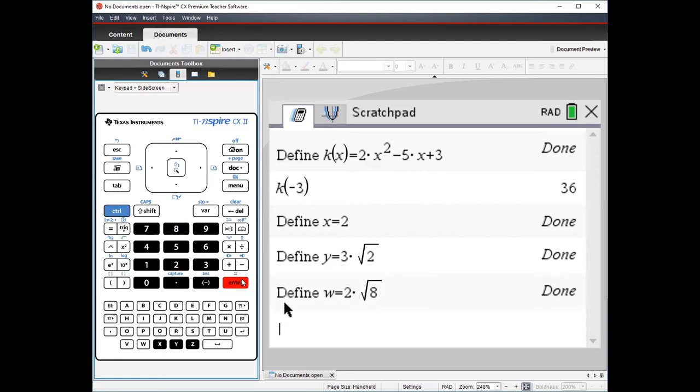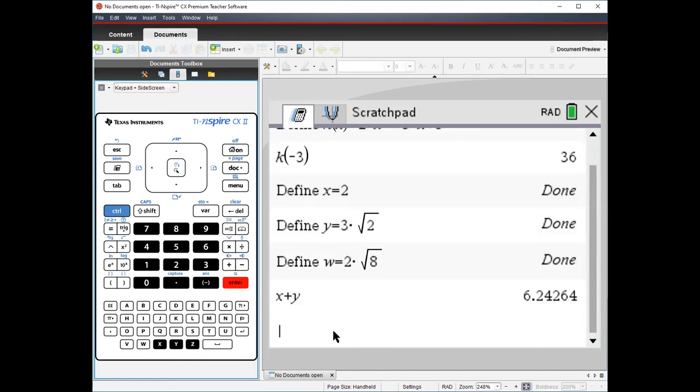Hopefully you remember that rational numbers are exact fractions where the numerator and denominator are both integers, and irrational numbers are decimals that don't have a pattern and go on forever. Maybe if we type out these four values, we can deduce that one is definitely rational. Option 1 is x + y, which equals 6.24264.